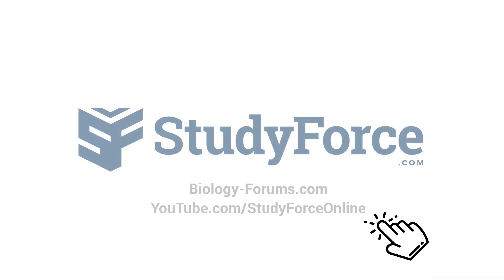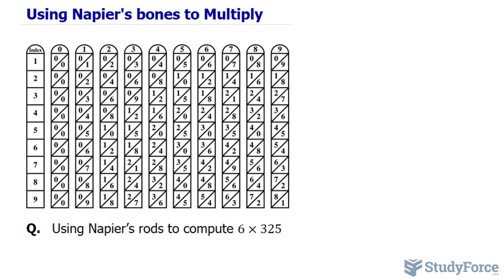In this quick tutorial, I'll show you how to use Napier's bones to multiply. What you see on your screen is what is referred to as Napier's bones or rods. And what I'll do is show you how to multiply 6 times 325 using this ancient method.